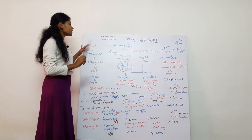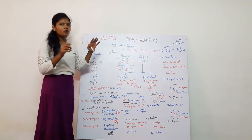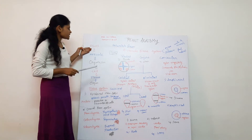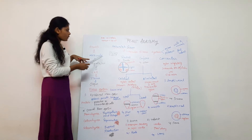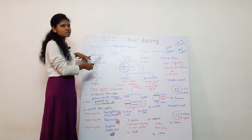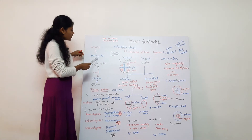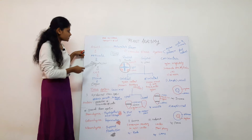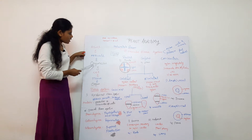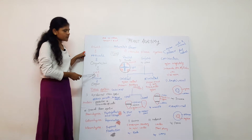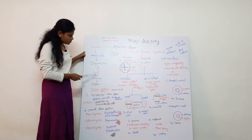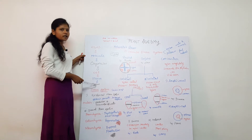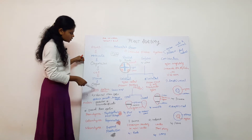This is the organization of plant anatomy. Atoms are organized into molecules — these are called minute particles. Molecules are organized into organelles, organelles into cells, cells into tissues, and tissues into organs. We will talk about the organs and tissues.